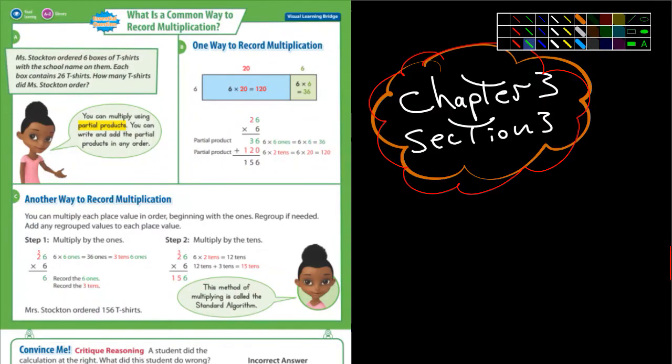Okay, here we go. Chapter 3, Section 3, and you're simply multiplying by single digits.